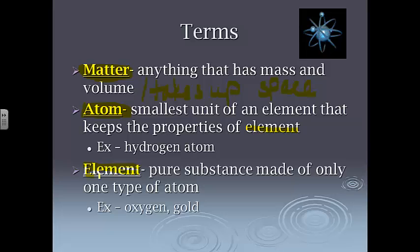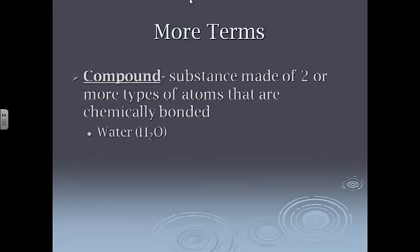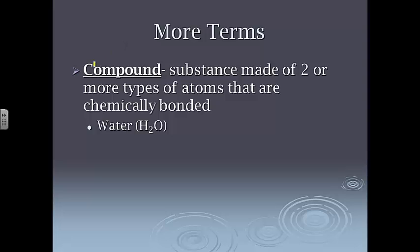Now, an element is a pure substance made of only one type of atom. So again, we've got this whole periodic table thing where your examples might be oxygen, gold, carbon, silver, anything that's on that periodic table. So lots of vocab in unit one. It's the only one, about the only one we do without any math. So it's a pretty good shot to get a pretty decent grade under your belt and get the flow of the class.